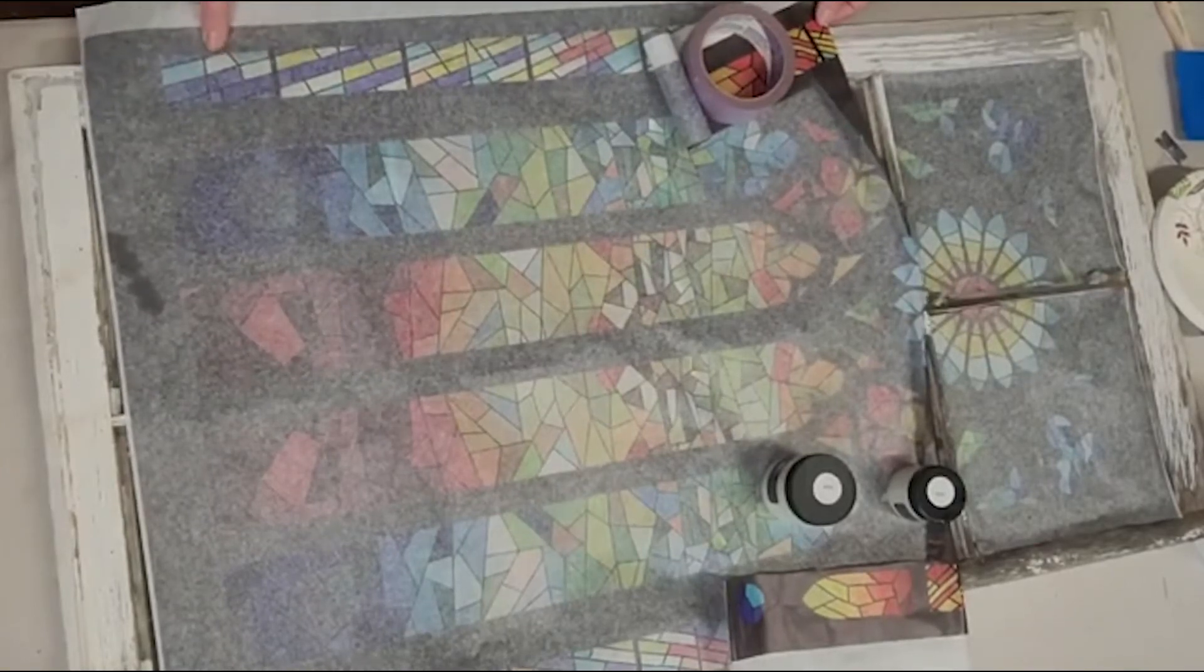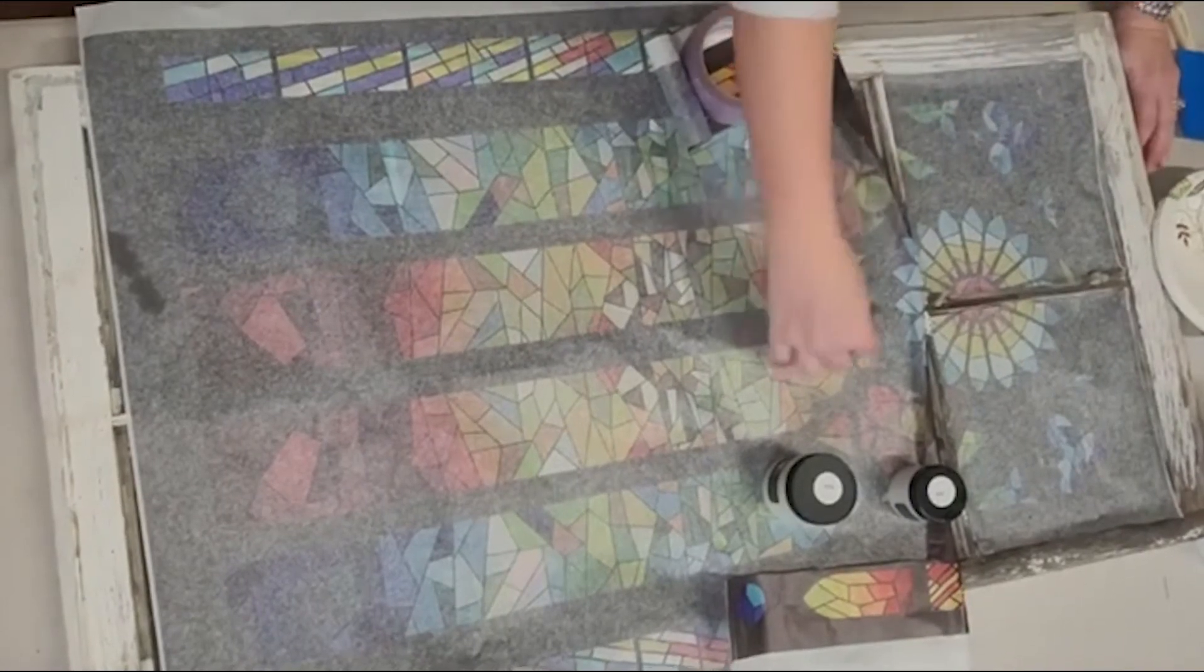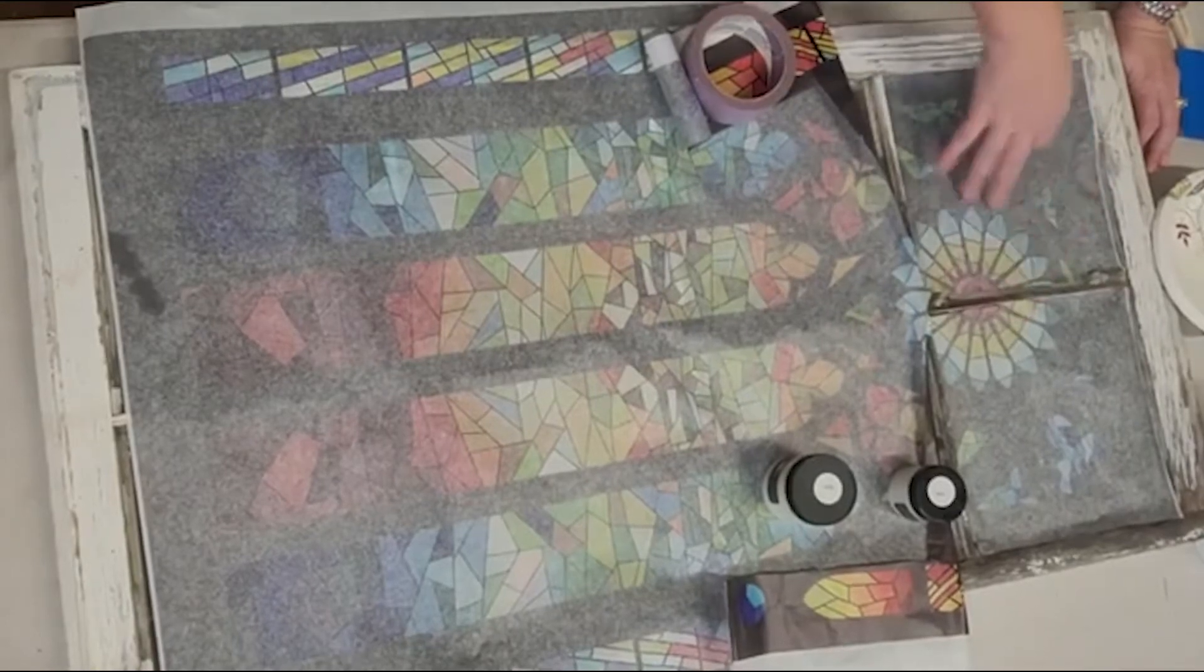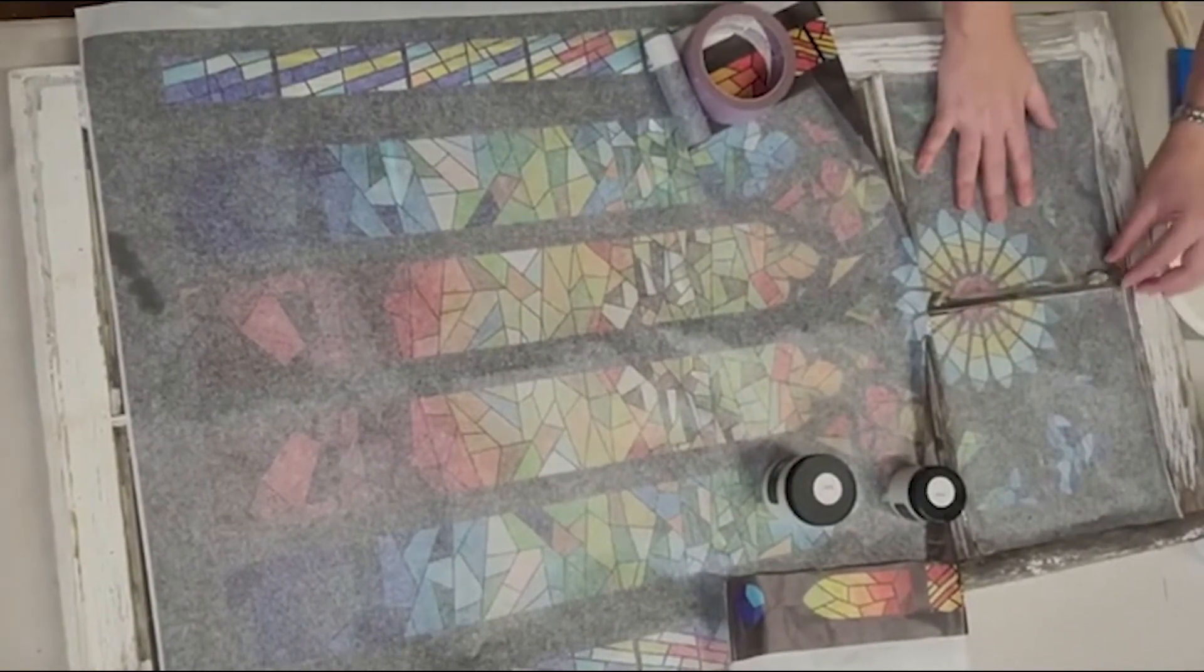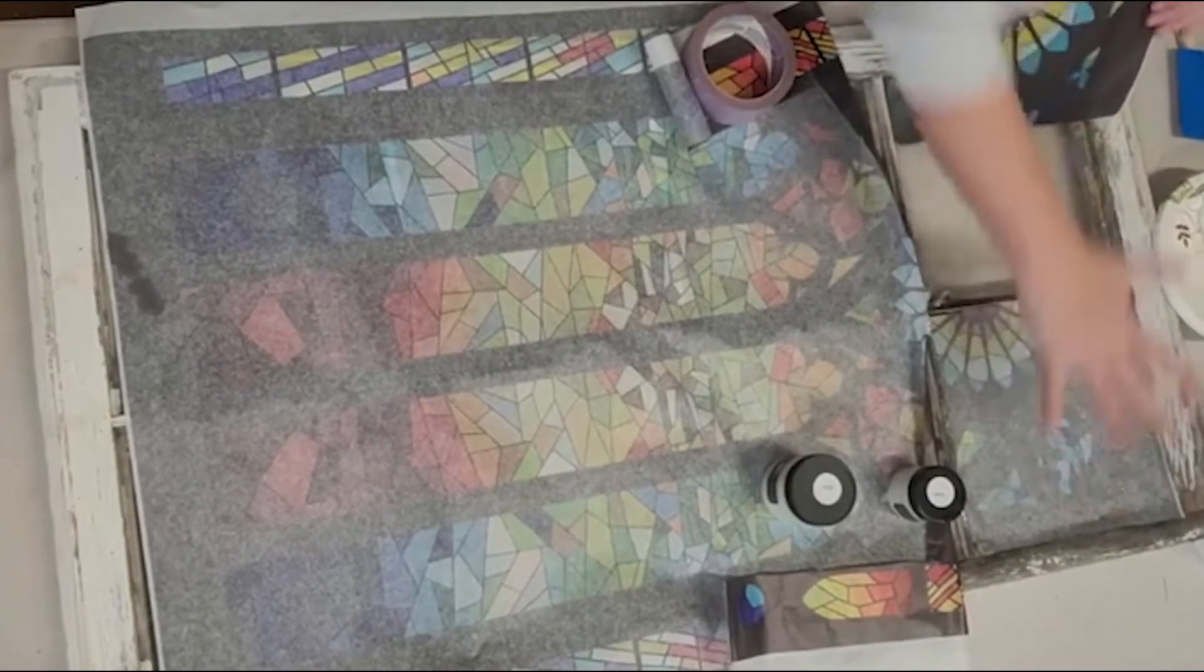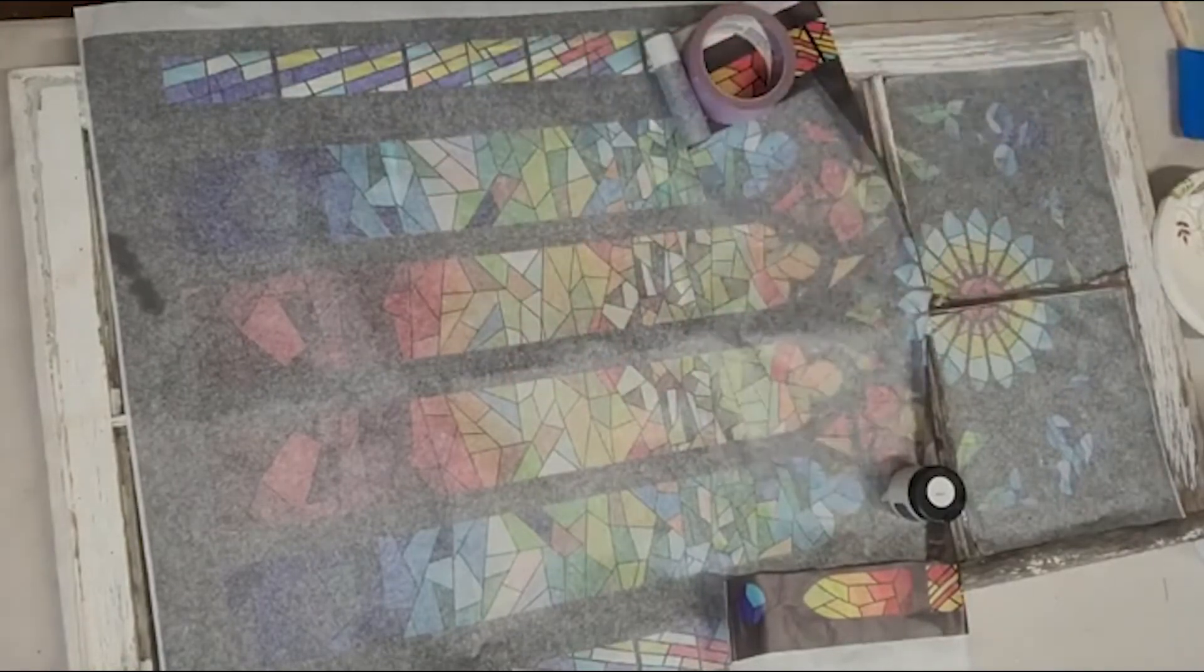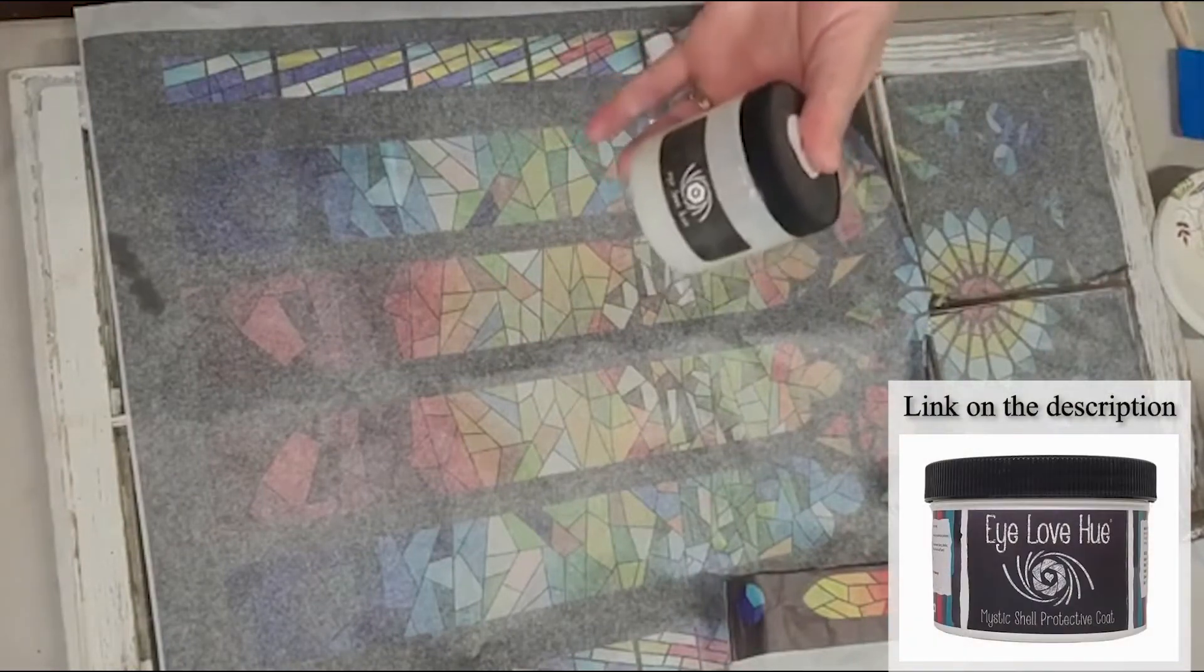So then what I did is I took my razor blade and I leaned on the inside and cut out just a little bit extra for each pane. So this is going to be in this one, that's going to be in that one. I'm going to put these two down and then I'll show you how we cut them going forward. Okay, today I'm using I Love You Satin Top Coat.